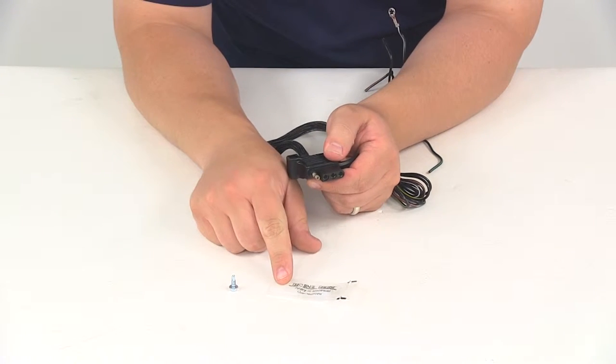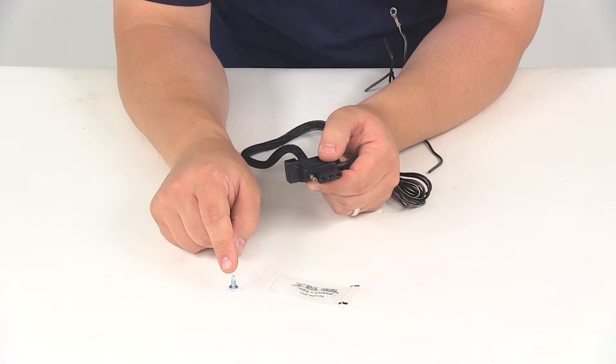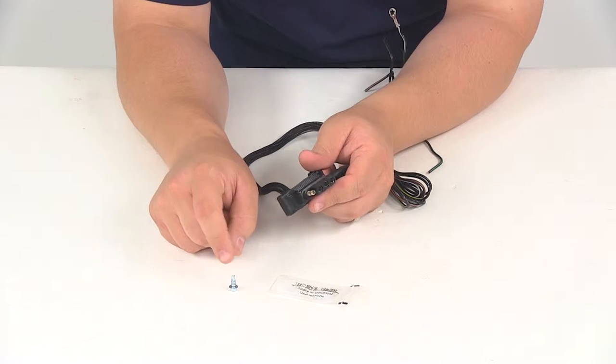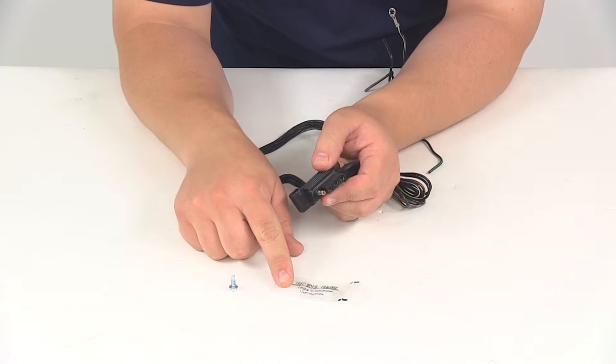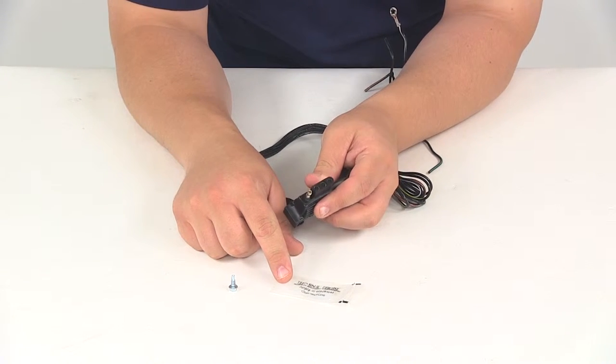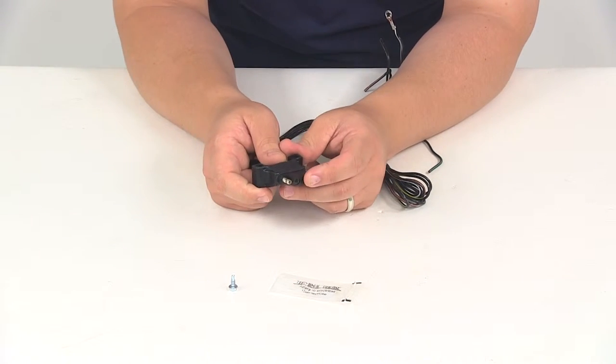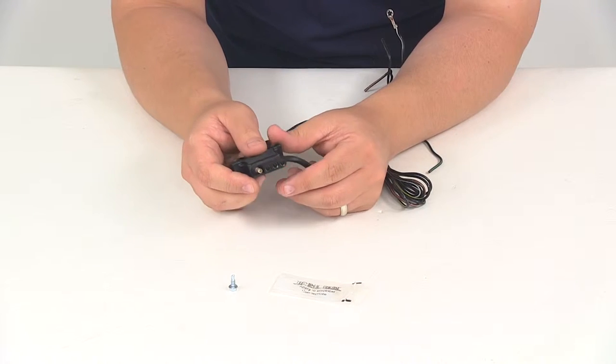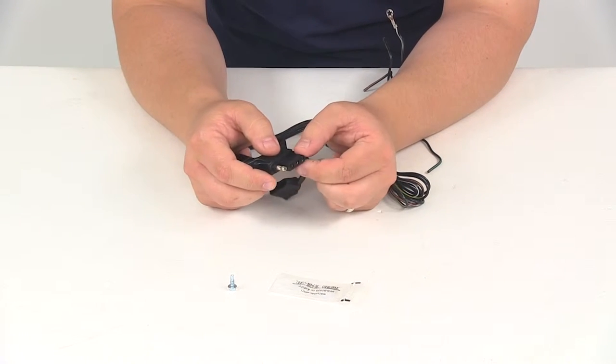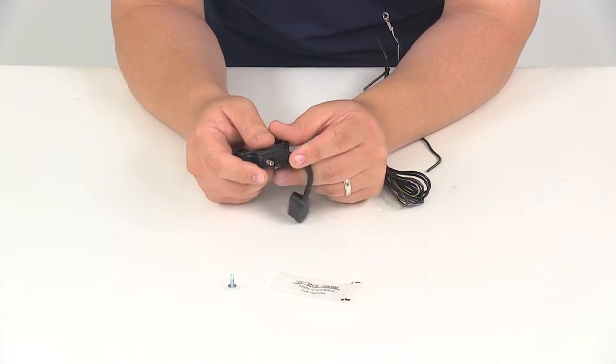It includes a terminal grease packet and a self-tapping screw for a ground connection. We always recommend using the terminal grease on all electrical connections. That helps prevent any type of corrosion from settling in and causing damage to the connections themselves.